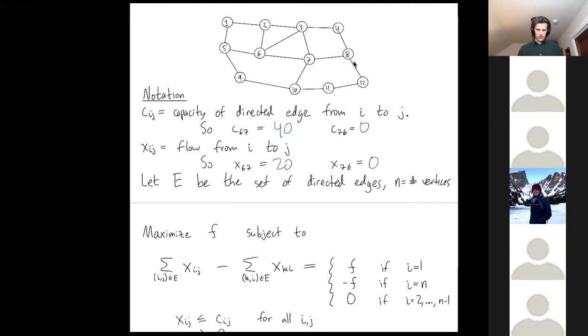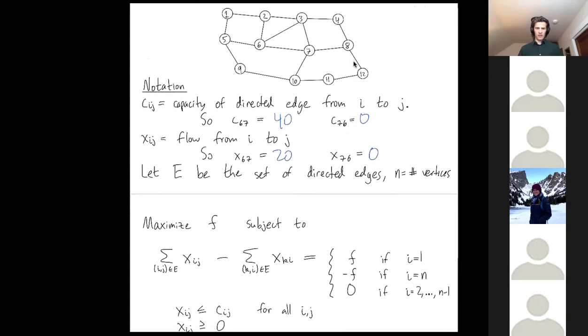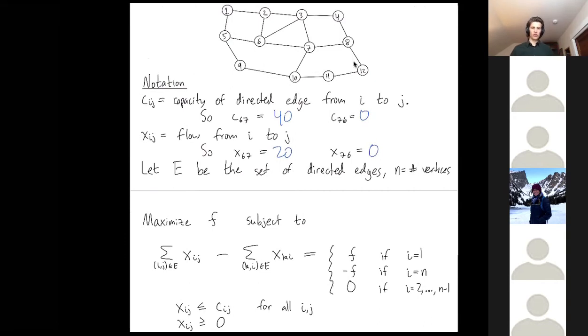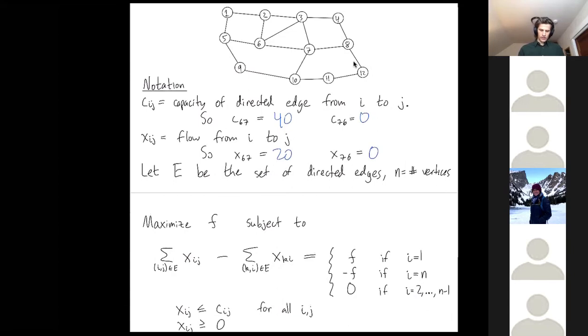As a linear programming problem, we're going to maximize f. f is going to be the total amount of flow. We have a constraint for each vertex. Right now we're looking at the constraint for vertex i. Think of i as fixed on this left-hand side.